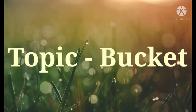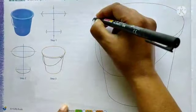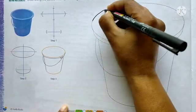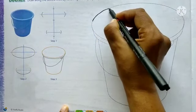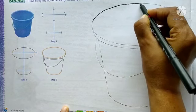Children, let's start making the drawing. First we will do the outline. You can use a marker or black sketch pen for the outline.